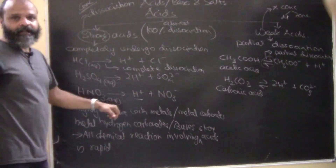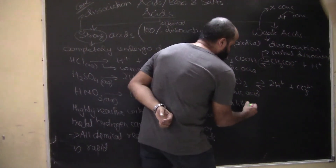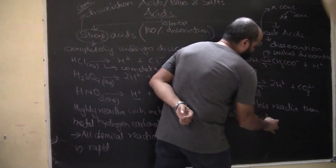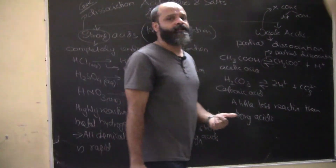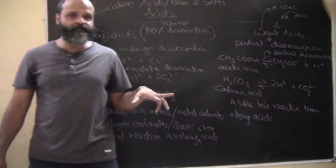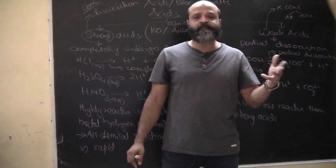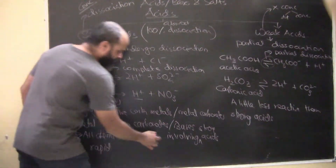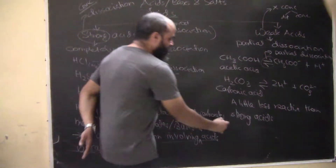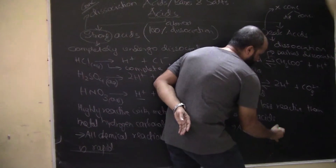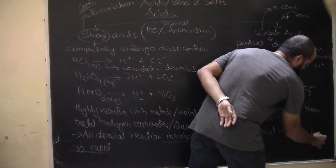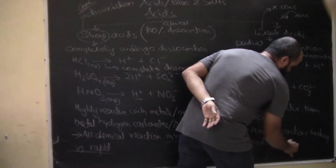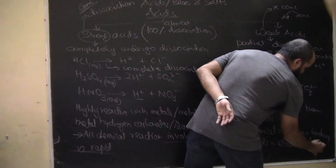Since all chemical reactions are correlated to the degree of dissociation, weak acids are a little less reactive than strong acids. All properties displayed by strong acids - turning blue litmus red, pH scale reading, reactions with metals, metal carbonates, and bases - take place in weak acids too, but slowly. All chemical reactions involving weak acids are slow.